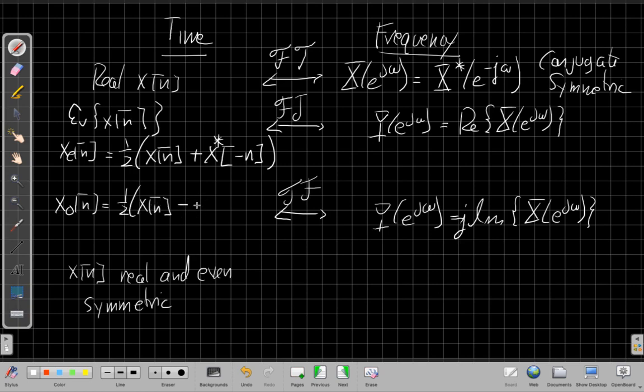And so it's x of n minus the conjugate of x of minus n. So things that are odd, conjugate odd in time end up making things that are imaginary in frequency.